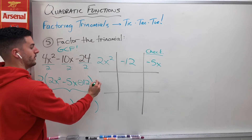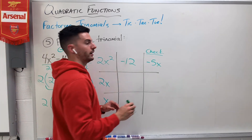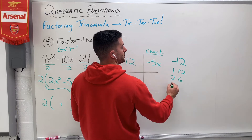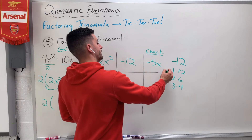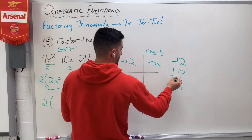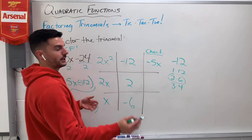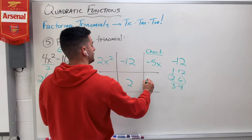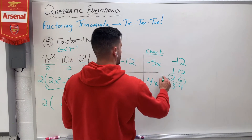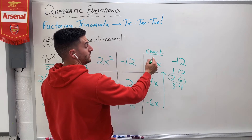Let's do the math. 2x squared would be 2x times 1x. Now negative 12 — forget the negative for now. The factors are 1 times 12, 2 times 6, 3 times 4. Because it is negative, one of the numbers in the pairs has to be negative. Let's pick a pair — I'll go with 2 and 6, making 6 negative. So 2x times 2 gives me 4x, and x times negative 6 gives me negative 6x. Negative 6x plus 4x is negative 2x, not negative 5x — so that did not work.